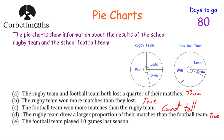Our last statement is that the football team played 10 matches last season. One thing I notice is that they lost a quarter of their matches. A quarter of 10 — you halve it and halve it again — half of 10 is 5, half again is 2.5. So that would mean they lost 2.5 matches, which is not possible. So the statement that the football team played 10 matches last year is false.